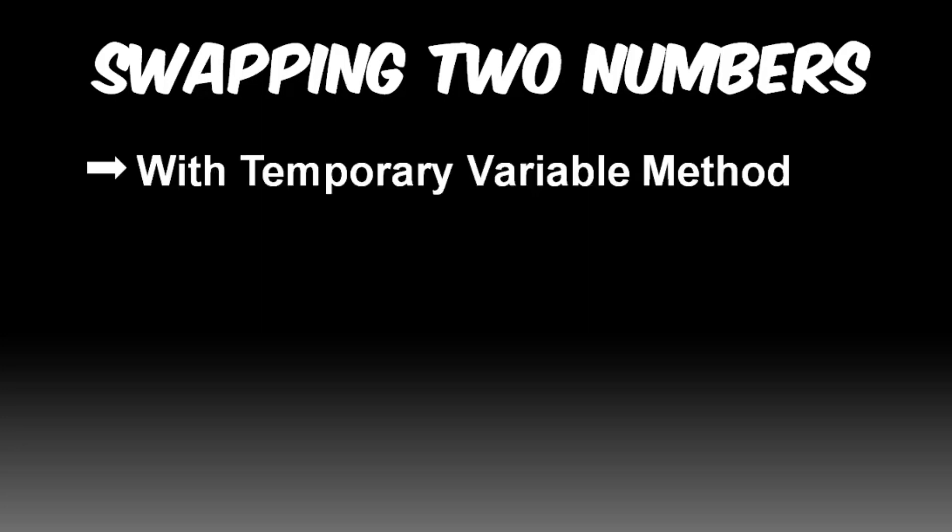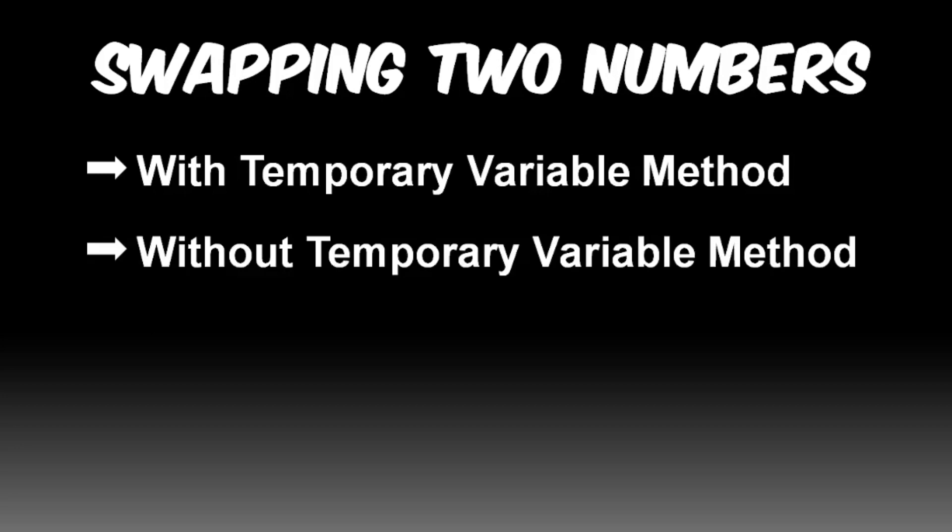Swapping two numbers. We all know very well that swapping of two numbers means to interchange the value of two variables. This can be performed mainly by two processes: one with a temporary variable method and the other without a temporary variable method.